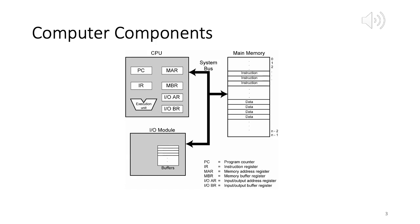Sequential execution goes through addresses like 100, 104, 108 when working with ints. There is also an execution unit for executing instructions and doing arithmetic. We won't go too deep into each of these since they are part of the architecture course — here we spend most time learning about operating systems.